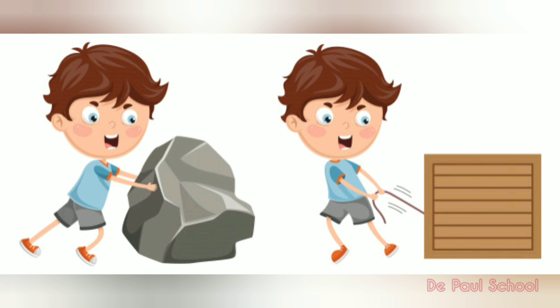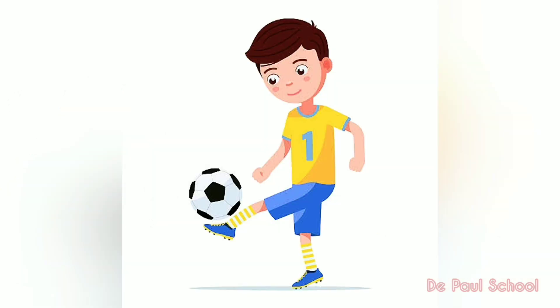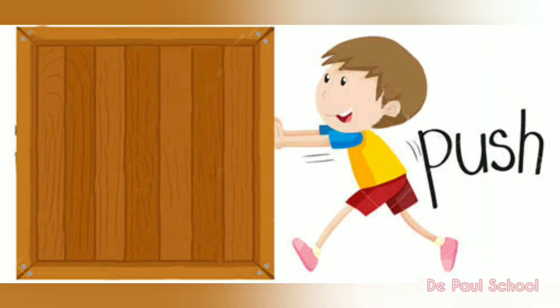Since we have already learned in class 4 that with the help of force we are able to do a lot of things — like we can move a stationary object, we can stop a moving object, we can change the direction of a moving object. Similarly, when we kick a football it moves, whereas when we push a wall it does not move no matter how much energy we spend. Have you ever thought about why the wall does not move when we apply force?